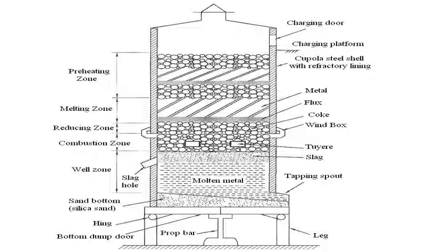Looking at the figure, this is a cupola furnace with a vertical position. It has a steel shell with a height ranging from a minimum of 20 to 35 feet. There are two legs on the left and right side, and two doors on the cupola, which is oriented vertically.